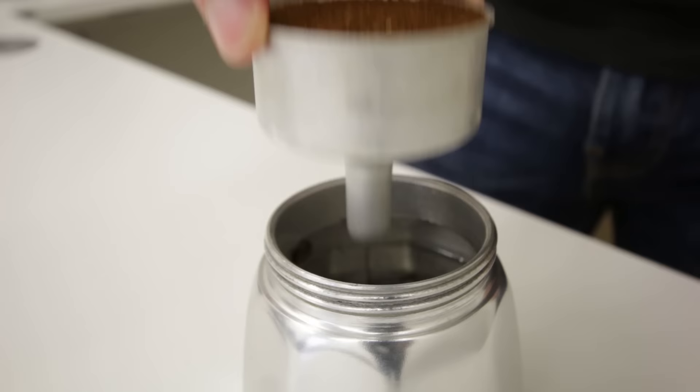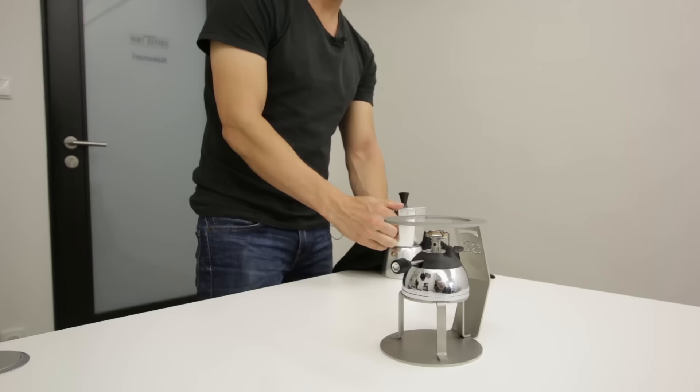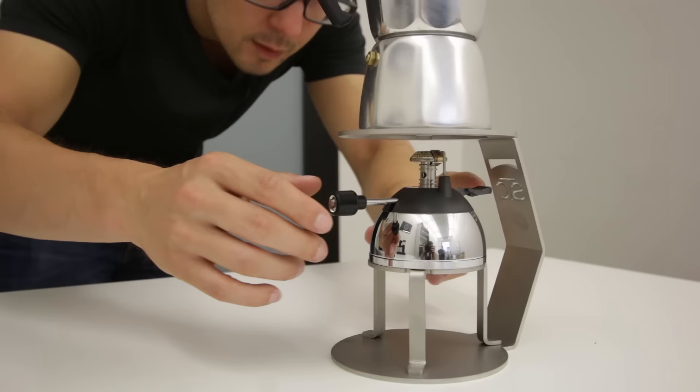Then you top it up with the coffee basket, and because the bottom part is now hot, you use a towel and screw the two parts together. Then you put it on a stove, or in our case on a burner that will help us to really prepare the coffee. This is actually one of the advantages of the moka pot.